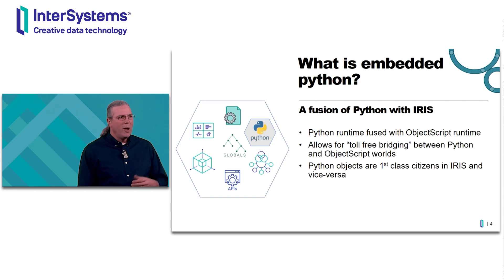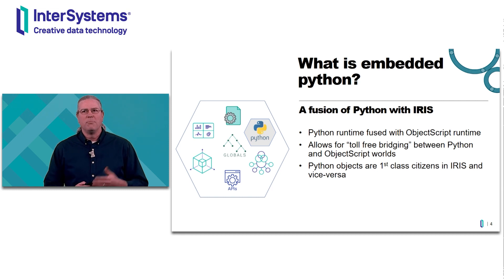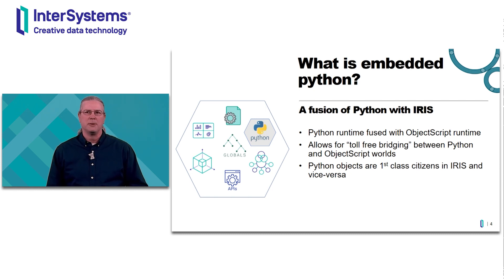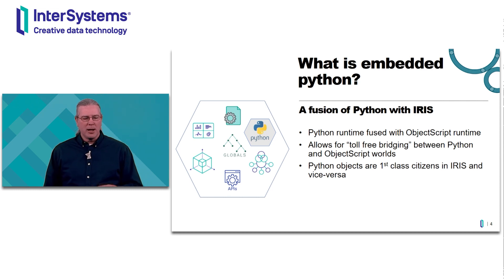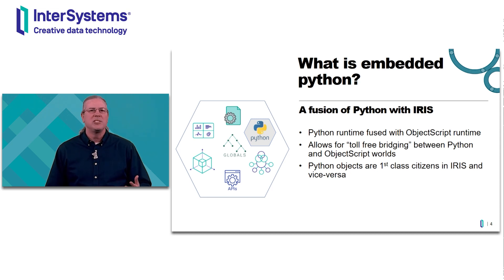So what is Embedded Python? Embedded Python is a fusion of Python with ObjectScript in IRIS. Both the Python virtual machine and the ObjectScript virtual machines are running side by side inside the IRIS process. You can invoke methods on Python objects from ObjectScript, and you can invoke methods on ObjectScript objects from Python — it all just works. Having both runtimes together allows for what I call toll-free bridging between the two worlds. You can pass objects from one language to another without having to serialize them in between.